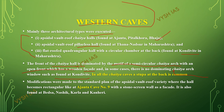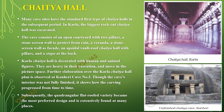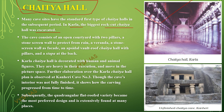In all the chaitya caves, a stupa is found at the back, which is a common feature because the chaitya is a prayer hall. Modifications were made to the standard plan of the apsidal wall-roof variety, where the hall becomes rectangular, as in Ajanta cave number nine, which has a stone screen wall as a facade. At Karla, the biggest chaitya hall has been excavated. The cave consists of an open courtyard with two pillars and a stone screen wall.